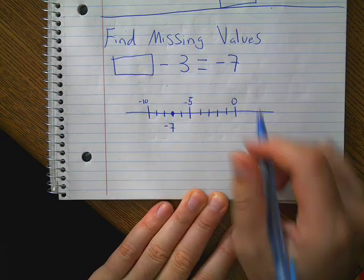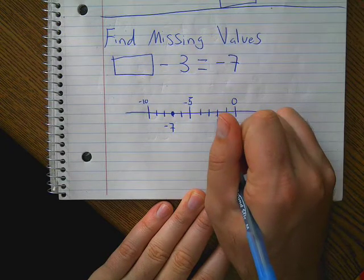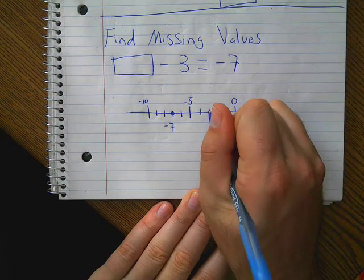And I'm going to find negative 3 is going to be negative 1, negative 2, negative 3 is going to be right here.